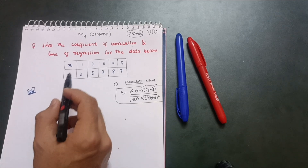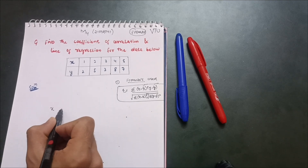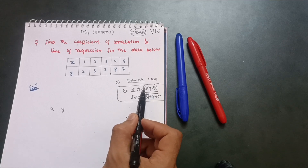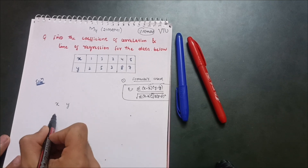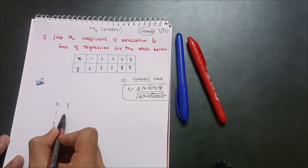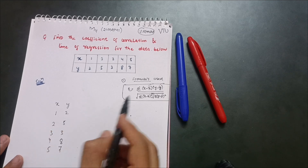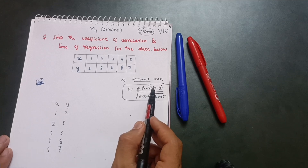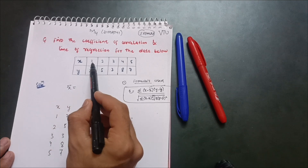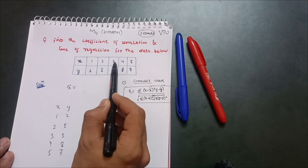Let me draw a table with columns: x, y, x minus x̄, y minus ȳ, (x minus x̄)², (y minus ȳ)², and (x minus x̄)(y minus ȳ). The x values given are 1, 2, 3, 4, 5 and y values are 2, 5, 3, 8, 7. We need to calculate x̄ and ȳ first.